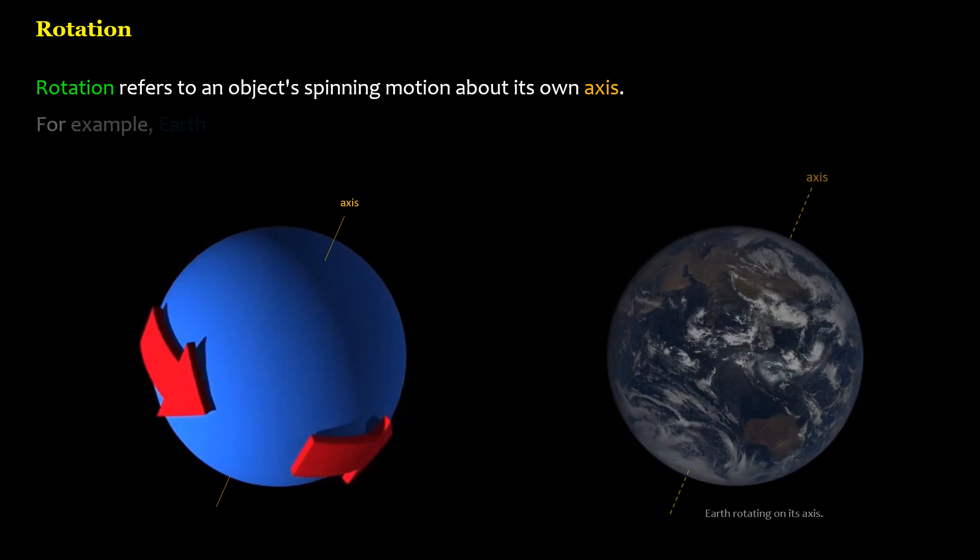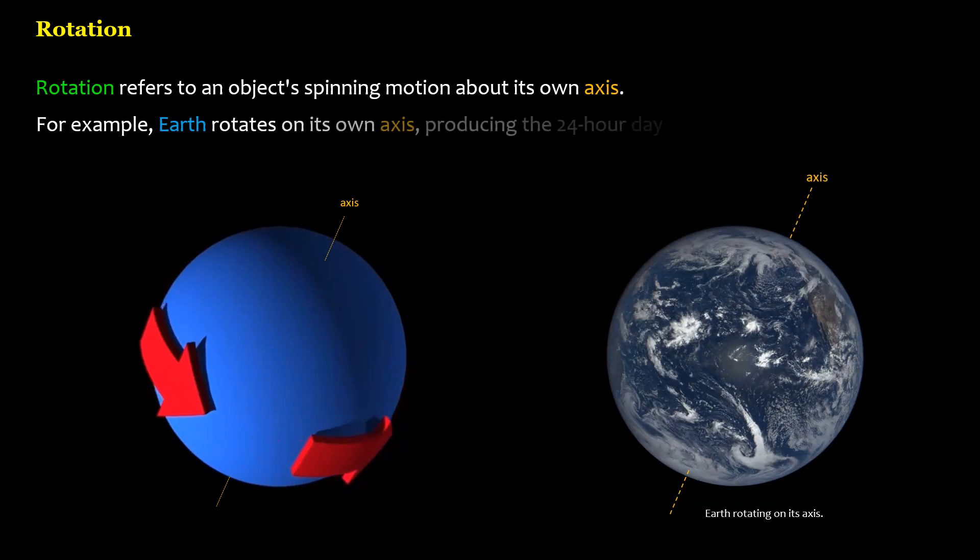For example, Earth rotates on its own axis, producing the 24-hour day.